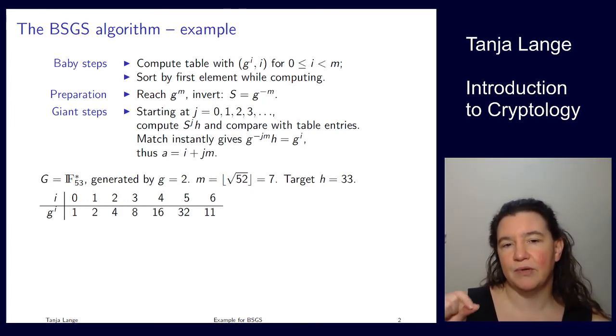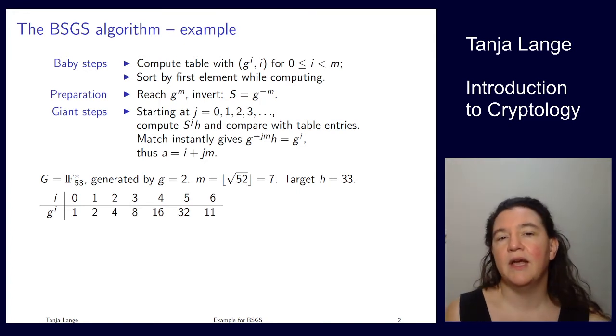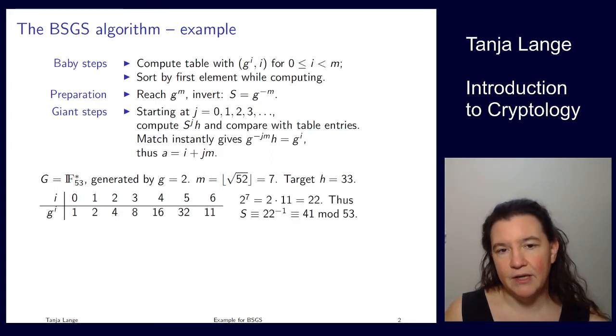So my s is the inverse of g to the m, which is g to the 7. For 2 to the 7, I've already computed g to the 6, so I just need to multiply by g again. In this case, I multiply by 2: 2 times 11 is 22.